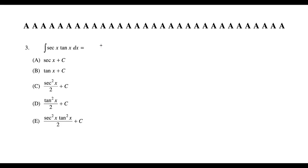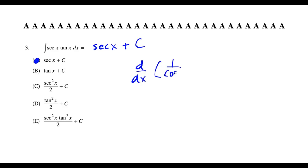Question three is straightforward if you know your formulas: the antiderivative of sec(x)tan(x) is sec(x) + C, matching choice A. If you forget, check answer choices by taking derivatives — the derivative of sec(x) is sec(x)tan(x), which you can derive by rewriting sec(x) as 1/cos(x).